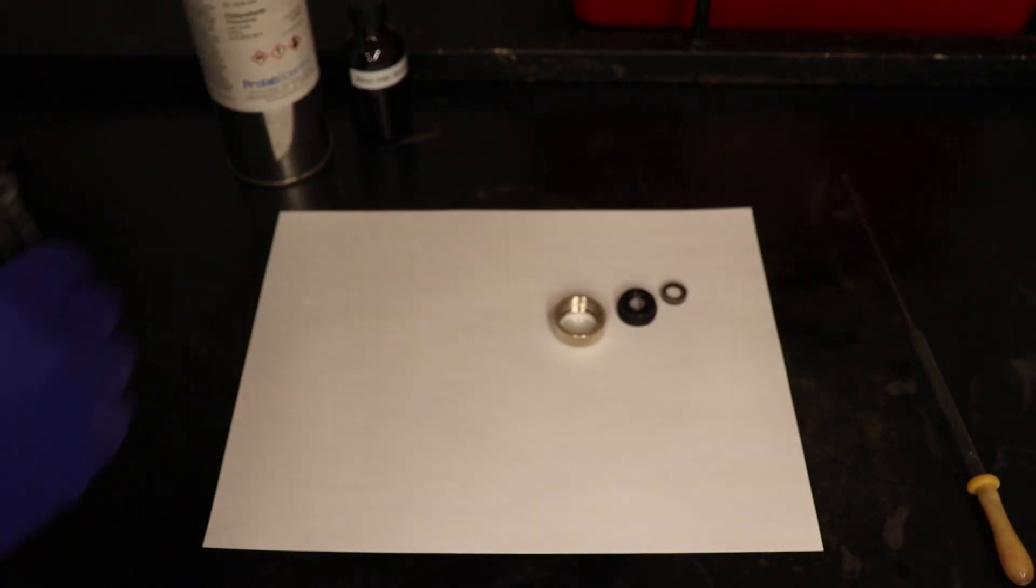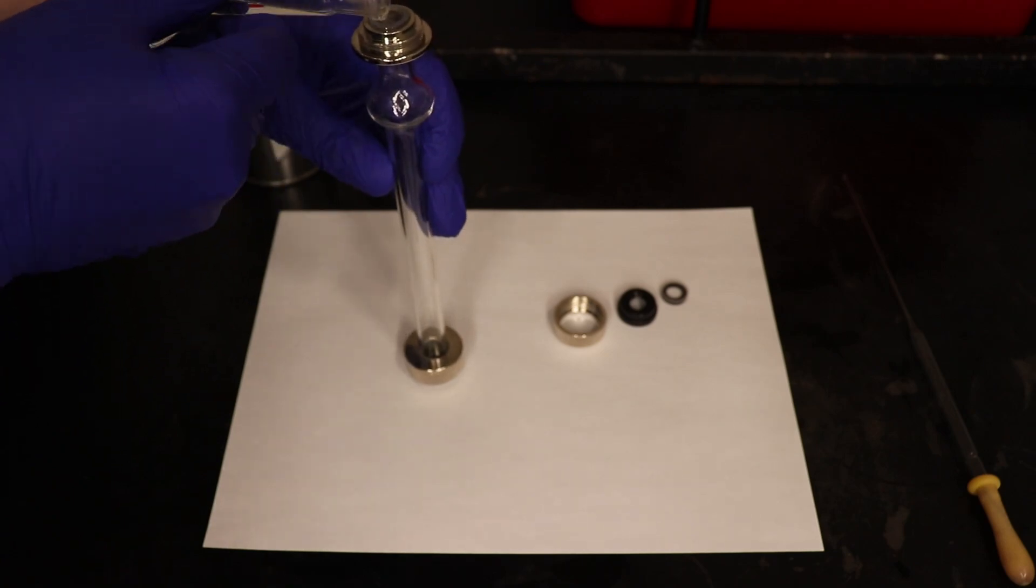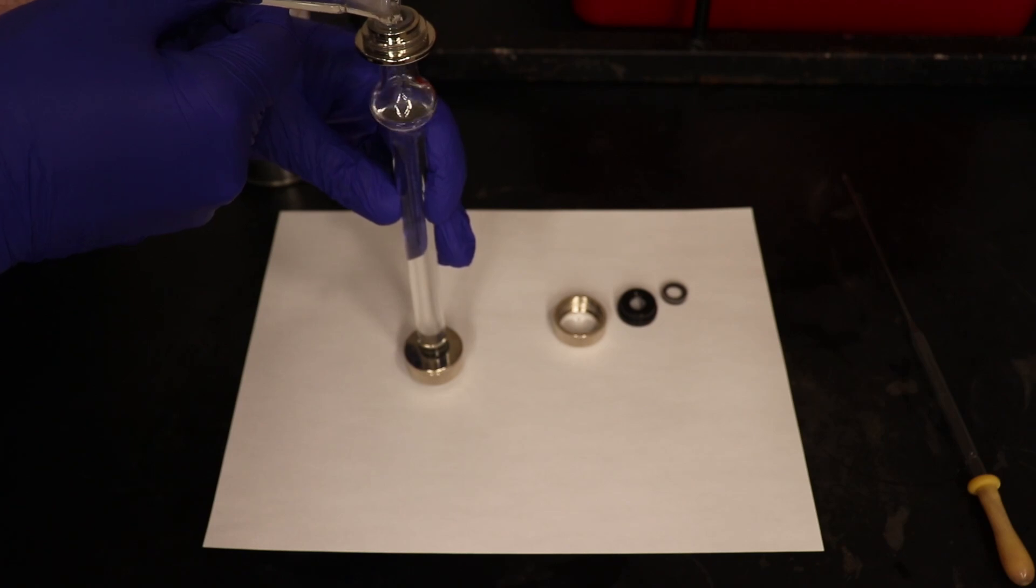Since I started with naturally derived L-alanine, the product should also be the enantiopure S-enantiomer. And the easiest way to check that is by measuring the optical rotation of the sample using a polarimeter.